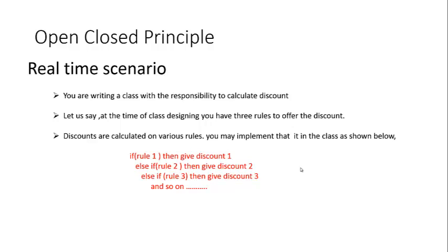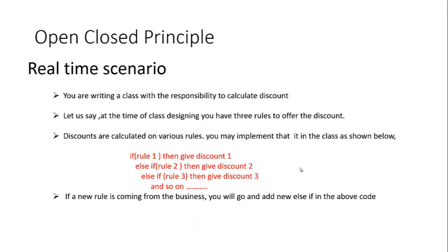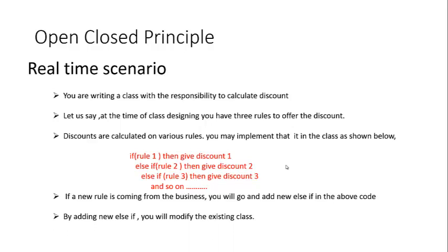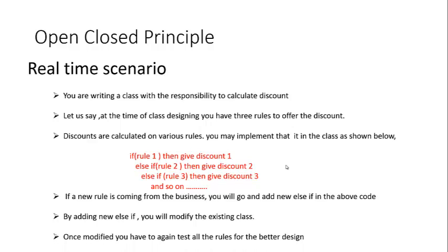Since while designing the class you have only three rules, you may hard code those three rules in an if/else-if tree and calculate discount. Now if a new rule is coming from the business, you will go and add a new else-if in the above code. By doing that you are modifying the existing class. And a sound design principle says that if you modify an existing class or existing code, you must test all its behavior once again.